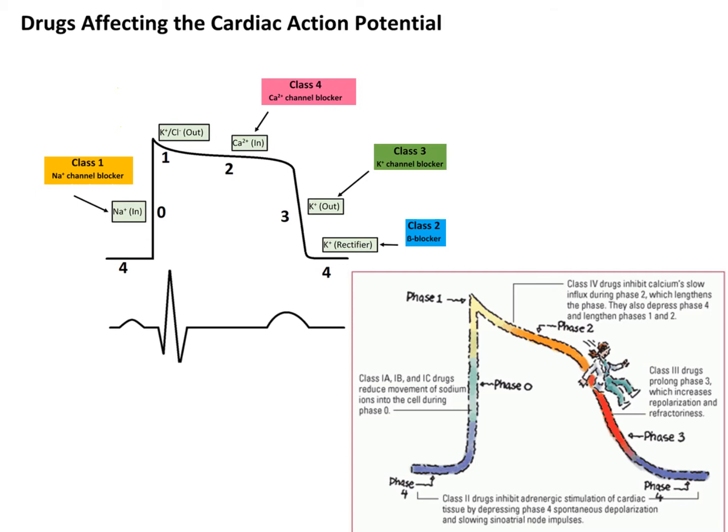Class two drugs inhibit adrenergic — sympathetic nervous system stimulation of the cardiac tissue. This also depends on an intact nerve connecting to your heart. When we get into heart transplants next semester, remember that we've severed the nerves in that new heart, so many things we take for granted in a normally innervated heart don't actually apply. When you give epinephrine to someone with a transplanted heart, it's not going to cause an increase in heart rate like it would normally.